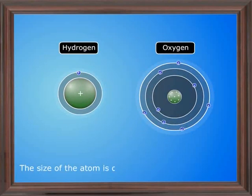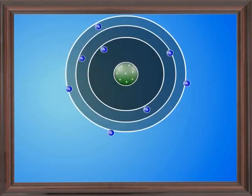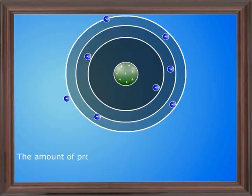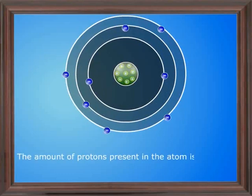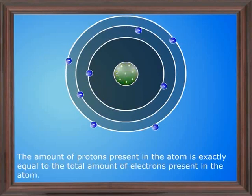4. The size of the atom is determined by the distribution of electrons around the nucleus. 5. The amount of protons present in the atom is exactly equal to the total amount of electrons present in the atom.